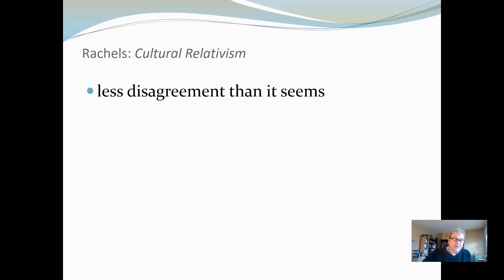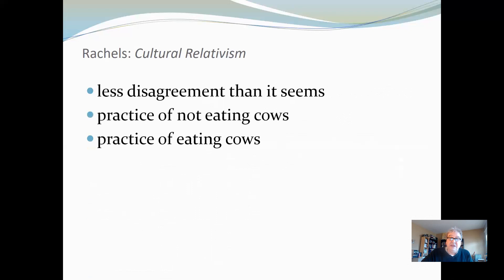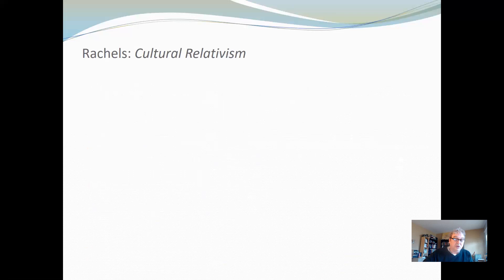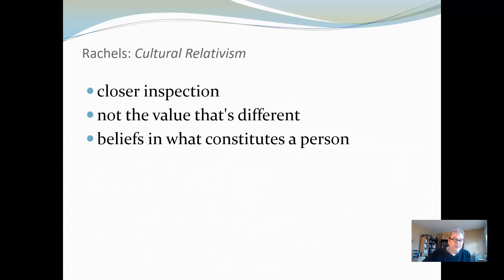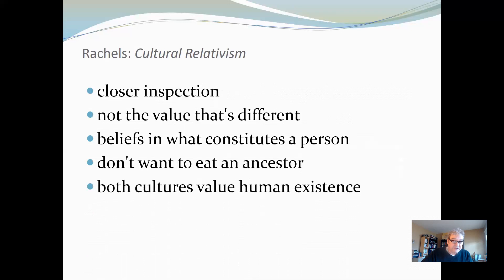Rachels goes on to argue that there is actually less disagreement between cultures than it seems. For instance, consider culture A that has a practice of not eating cows, whereas culture B has a practice of eating cows. It seems the two cultures have different values, but on closer inspection it may turn out that it's not the values that are different — it's the beliefs. Culture A believes that cows contain some manifestation of an ancestor, and they certainly don't want to eat an ancestor. So both cultures actually value human existence; it's just that the beliefs about what constitutes human existence differ. Similar points are made about Eskimos and infanticide.